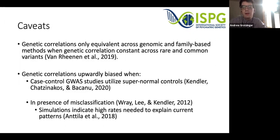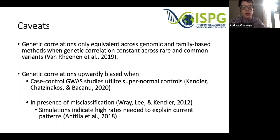There are some caveats to keep in mind when interpreting the genetic correlations and corresponding factor models. One is that genetic correlations are only going to be equivalent across genomic and family-based methods when the genetic correlations are constant across rare and common variants, because LD score regression is estimated using relatively common alleles with a minor allele frequency greater than 1%. If that clustering really changes at the rare variant end of the spectrum, which is certainly possible, that's going to shift those factor models as well, and it remains to be examined in future work.